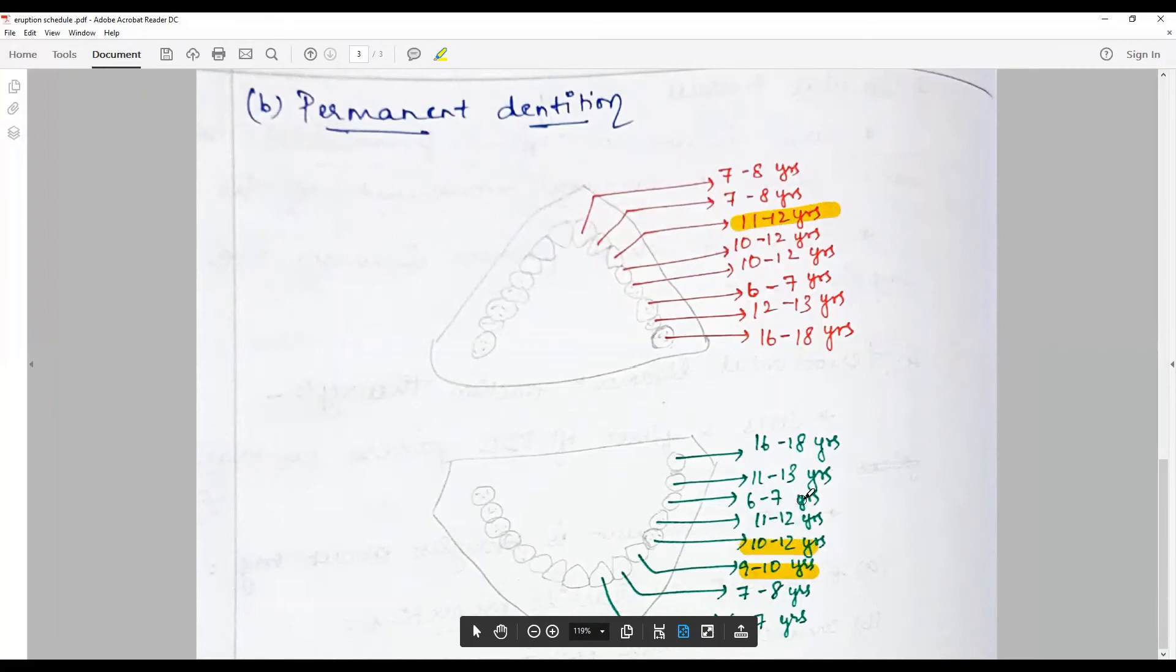The first premolars lower 10 to 12 years, upper 10 to 12 years. Second premolars 12 to 13 years, 11 to 12 years. The first molar six to seven years. That is the permanent dentition.